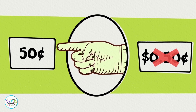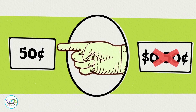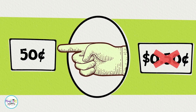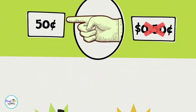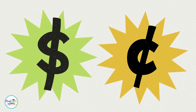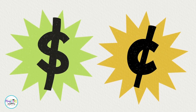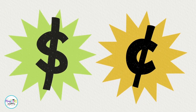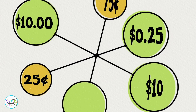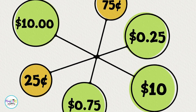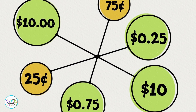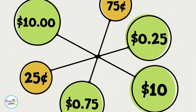We can write the cent symbol after whole numbers, and we never write both the dollar symbol and the cent symbol around the same number. It's important to learn the right way to write dollars and cents, because everyone has to use money. When we all write it the right way, it's easier to shop, spend, and save together.